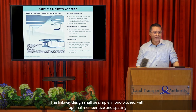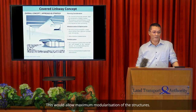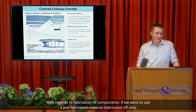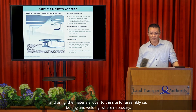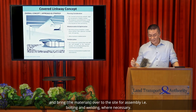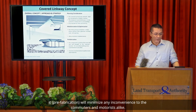The Linkway design should be simple, monopitch, with optimum member size and spacing. This would allow maximum modularisation of the structures. With regards to fabrication, if we were to use pre-fabricated materials, they could be fabricated off-site and brought to the site for assembly — bolting and welding if necessary. This pre-fabrication would minimise any inconvenience to commuters and motorists alike.